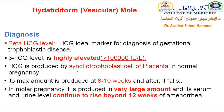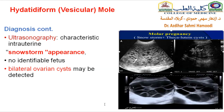If you do ultrasound, you will see in 50% of cases what is called theca lutein cysts. The ideal marker for diagnosis is beta-hCG, which will be highly elevated — up to 100,000 international units per liter. The production of beta-hCG is from sensitive trophoblast cells of the placenta. It reaches its maximum level around 9 to 10 weeks of gestation and then falls; but in molar pregnancy it will continue to rise beyond 12 weeks. On ultrasound, you will see the characteristic snowstorm appearance in complete mole, and in partial mole you will see part of this pattern with a fetus alongside the vesicles.